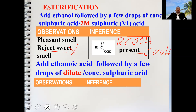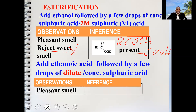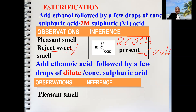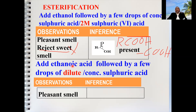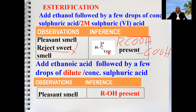You can also be given ethanoic acid to add, followed by a few drops of dilute or concentrated sulfuric acid, and you get a pleasant smell — the smell of an ester. In this scenario, we have added an alkanoic acid, so the substance being analyzed must be an alkanol. Therefore you conclude ROH is present, not OH. ROH is the functional group for alkanols; RCOOH is the functional group for alkanoic acids.